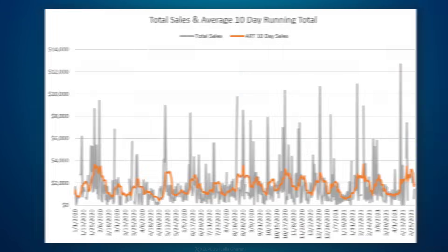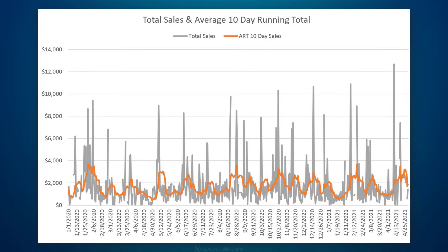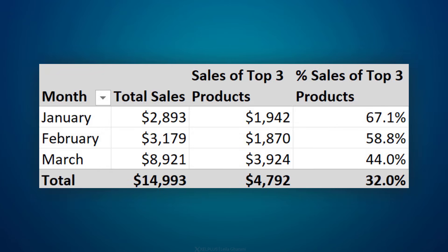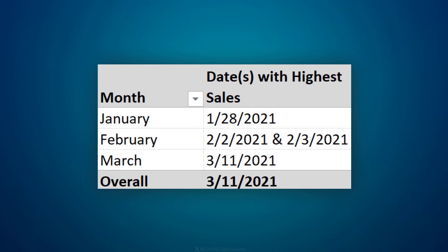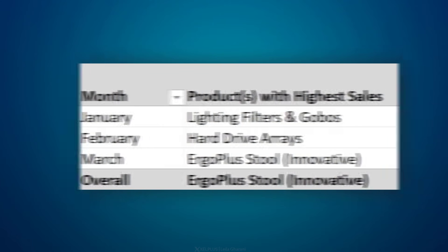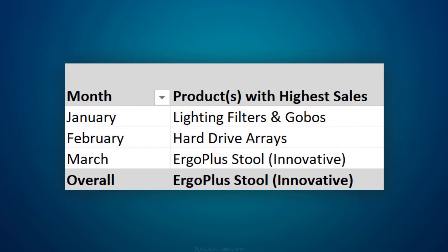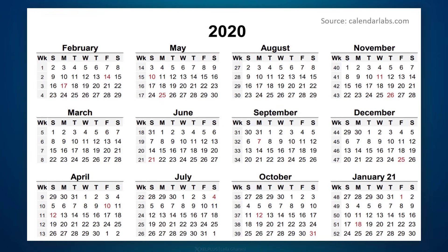You can create reports that show 10-day running totals or moving averages, average daily sales. You can get the total sales value of your top three products, find out which date had the highest sales, or which product brought in the most revenue. You can do time intelligence calculations on custom calendars like weekly calendars. All of these topics and a lot more are covered in my comprehensive Power Pivot and DAX course.